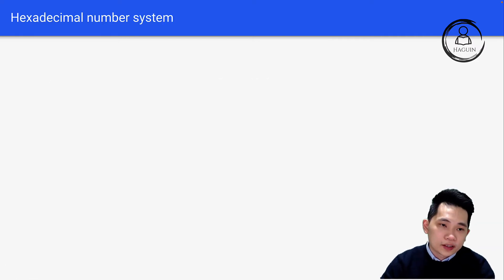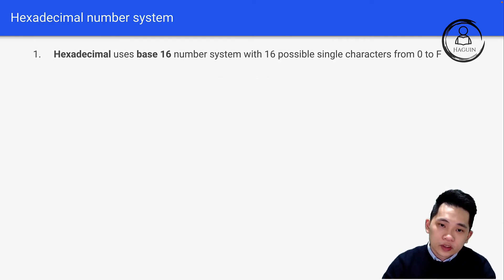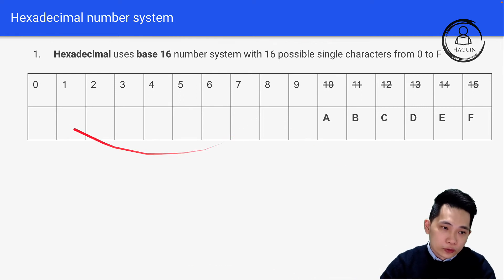Let's look into hexadecimal number system. Hexadecimal uses base 16 number system with 16 possible single characters from 0 to F. We have 0 through 9, then 10 through 15. Since it can only be single character, 10 is double character, so we replace 10 with A, 11 with B, 12 with C, 13 with D, 14 with E, and 15 with F.